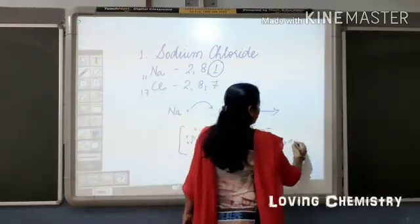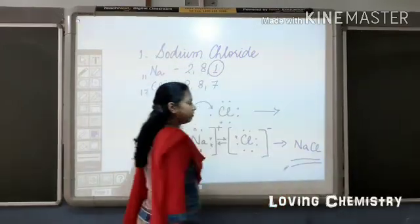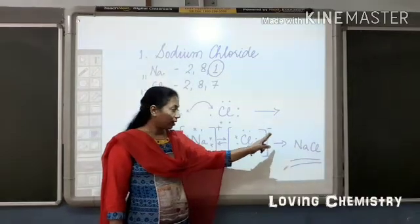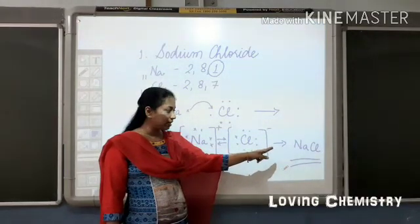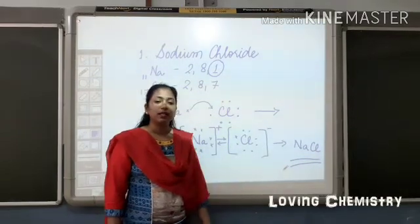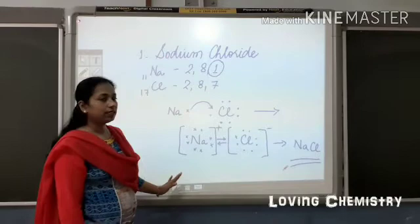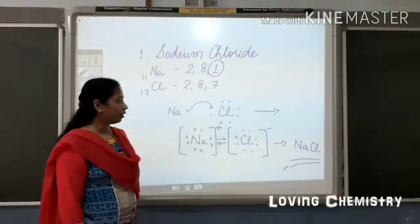In the form of ions and that is why they are called ionic compounds. We can write it as NaCl for our convenience. But whenever we see NaCl, we must remember that it is in the ionic state. Sodium is in positive ionic state and chloride is in the negative ionic state. So this is ionic bond or electrovalent bond, formation of electrovalent bond.